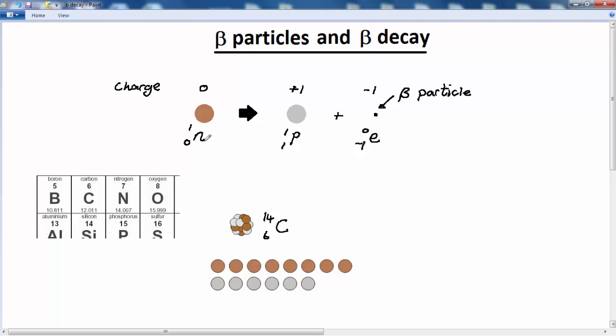In all of these nuclear equations the mass numbers and the atomic numbers must add up. We've got one equals one plus zero, and zero equals one plus minus one. What actually happens when this neutron decays into a proton and a beta particle in the context of an element such as carbon-14?